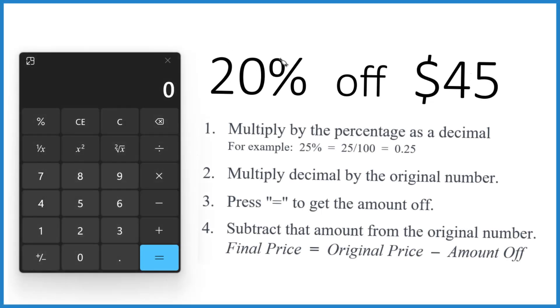Okay, so say you've got 20% off of $45, and you want to know how much that is. If you're paying $45, but you've got 20% off, what's your final price? Here's the way you do that.